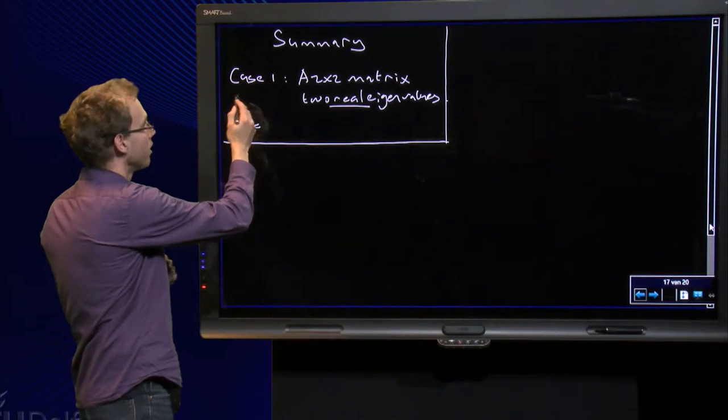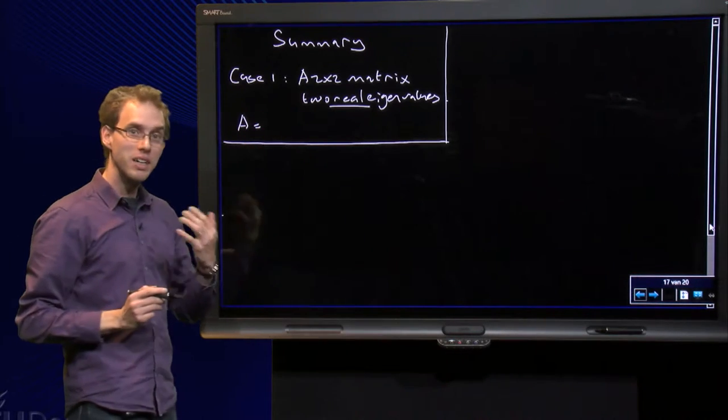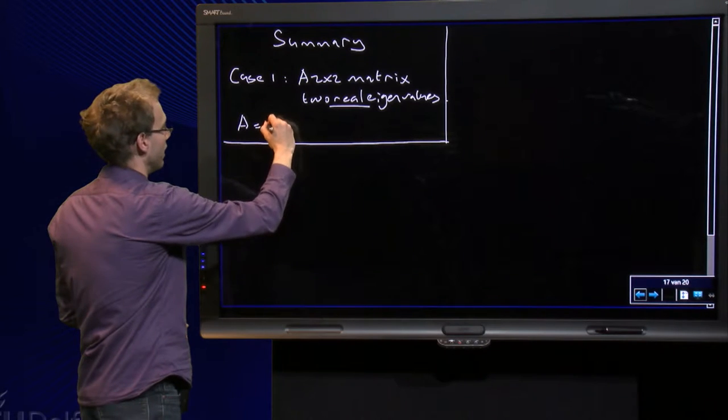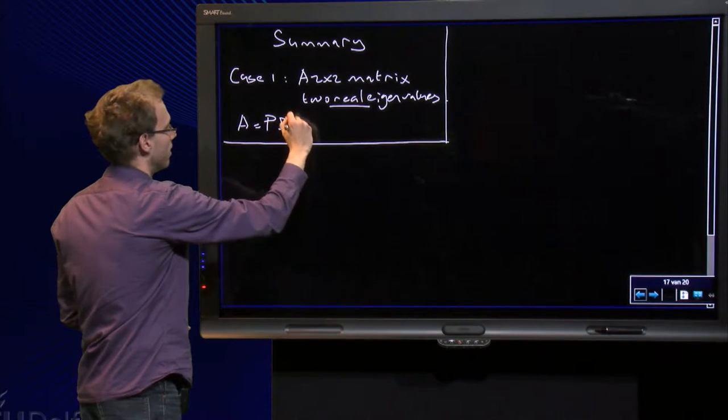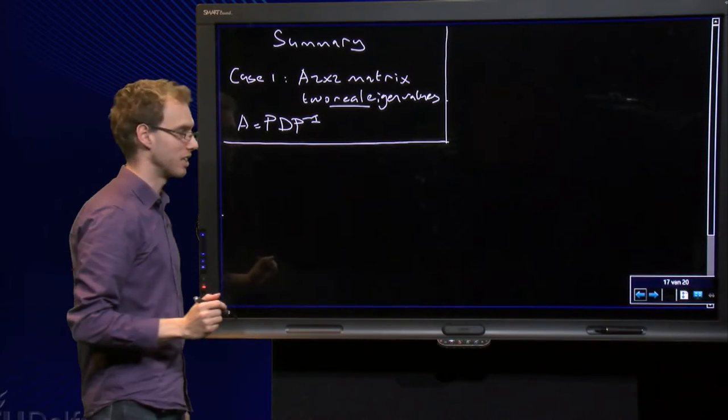In the summary, the first case we have a 2 by 2 matrix with two real eigenvalues. In that case we know that we can write A as PDP inverse. So A is similar to a diagonal matrix.